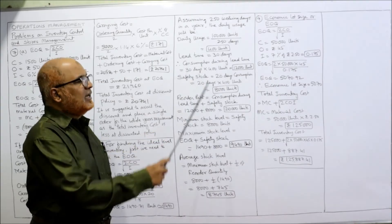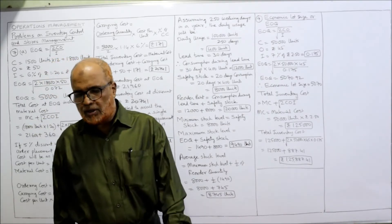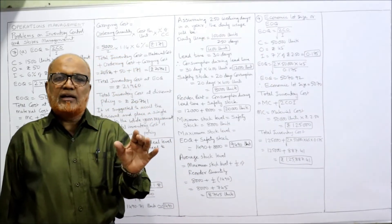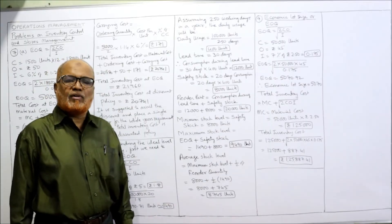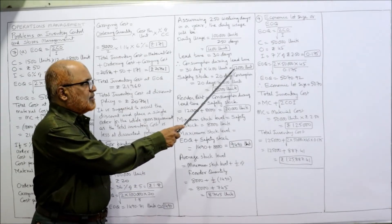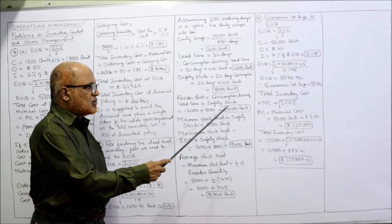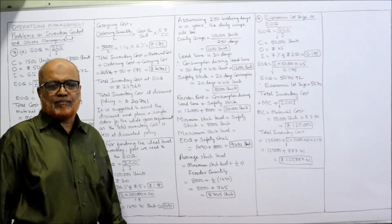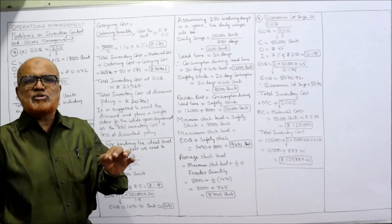Reorder point formula is: consumption during lead time plus safety stock. Consumption during lead time is 12,000 units and safety stock is 8,000 units. So reorder point equals 12,000 plus 8,000 equals 20,000 units.